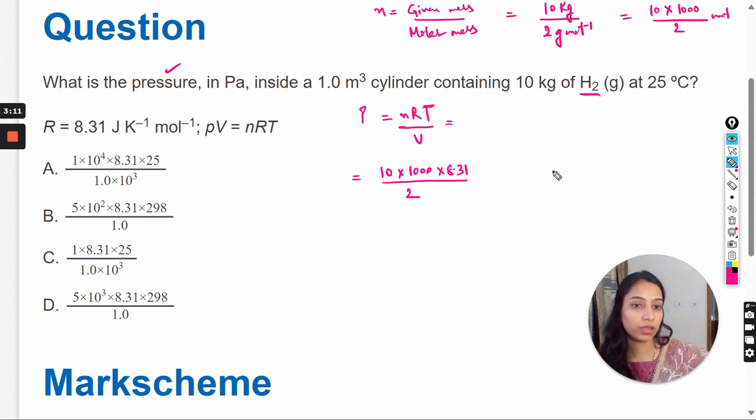So for n, units are mole. For R, units are joule per kelvin per mole, and 1 joule equals 1 pascal meter cubed. Why am I writing this? Because we have to find the pressure which is in pascal. So here we will write pascal meter cubed per kelvin per mole.